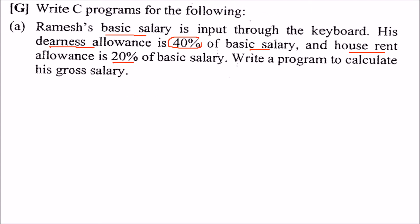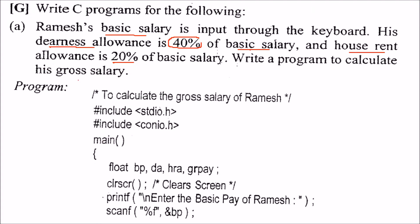The gross salary will be the basic salary plus 40% of basic salary plus 20% of basic salary. For that we'll write a program — this will be a comment: 'to calculate the gross salary of Ramesh.' We'll include two files: stdio.h, that is standard input output dot h, and conio.h, that is console input output dot h. We'll start with the main function.